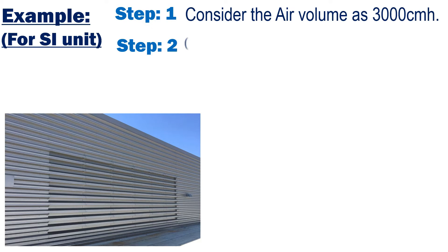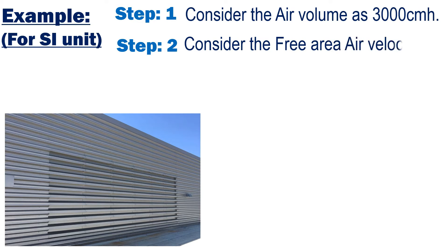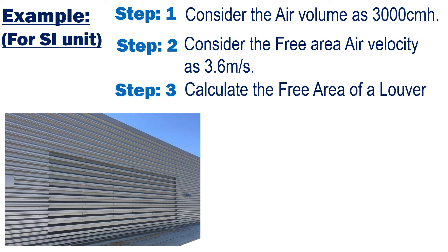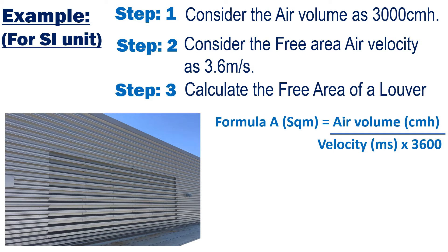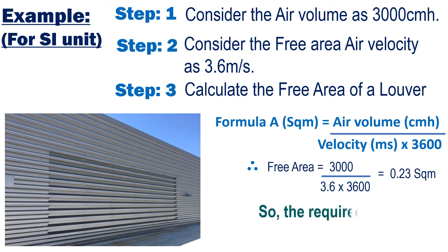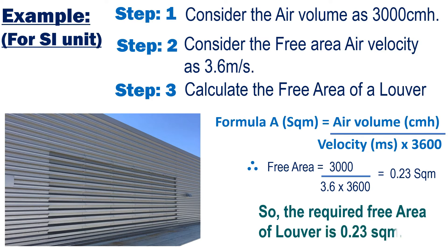Step 1: consider the air volume as 3000 cubic meters per hour. Step 2: consider the free area air velocity as 3.6 meters per second. Step 3: calculate the free area of the louver. The formula is: Free Area (m²) = Air Volume (m³/hr) ÷ Velocity (m/s) × 3600. Therefore, Free Area = 3000 ÷ 3.6 × 3600 = 0.23 square meters. So the required free area of the louver is 0.23 square meters.